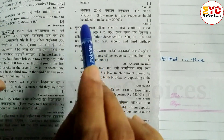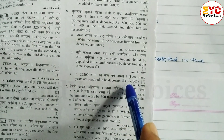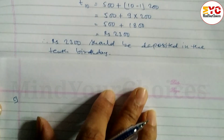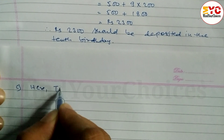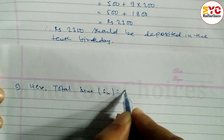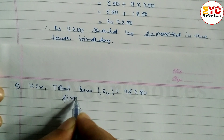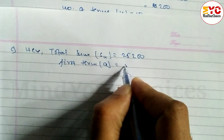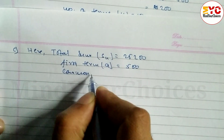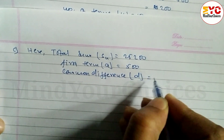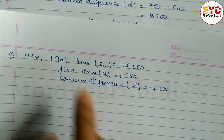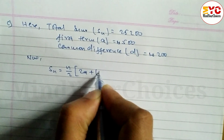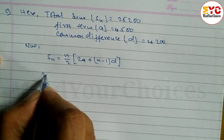The first birthday deposit is 500, second is 700, third is 900. Total sum Sn is equal to 25,200. First term A is equal to 500, common difference D is equal to 200. Using the formula Sn equals n by 2 times (2A plus (n minus 1) D).